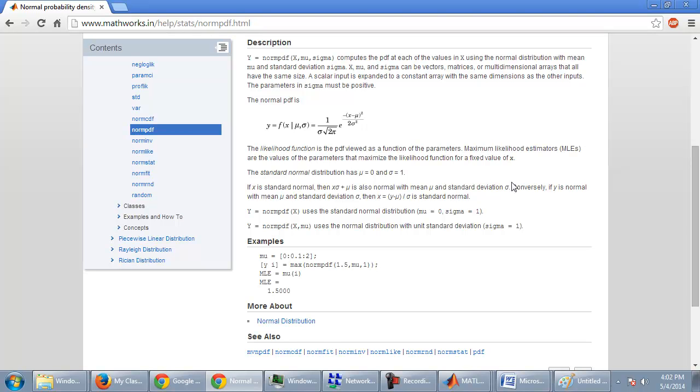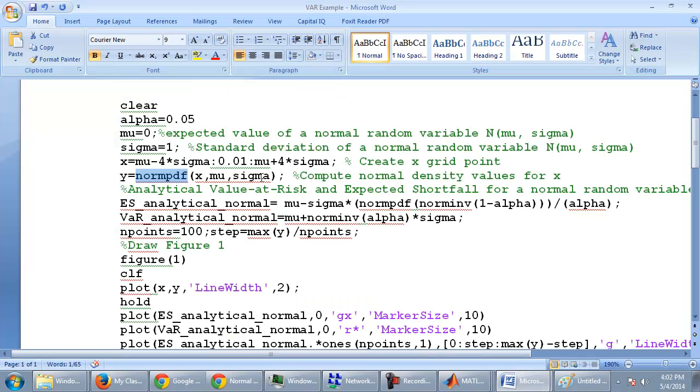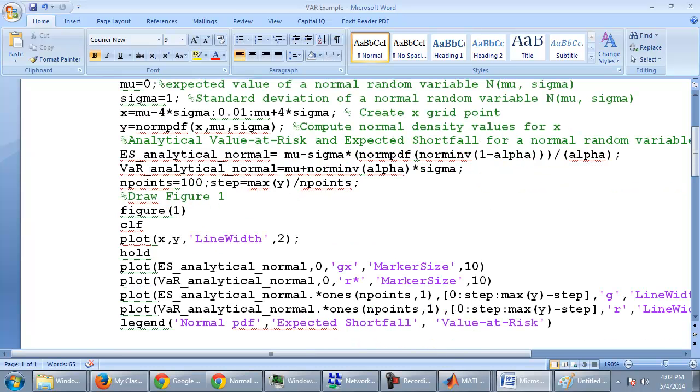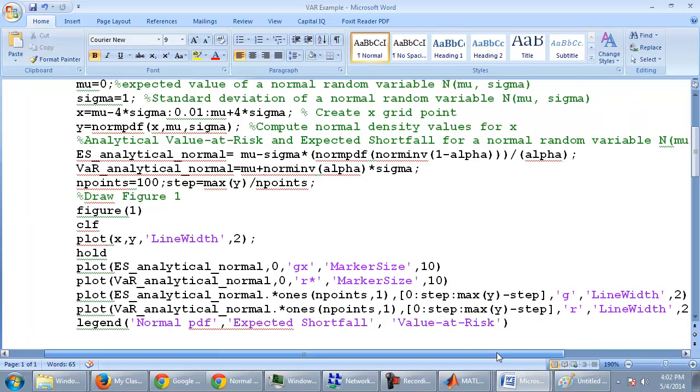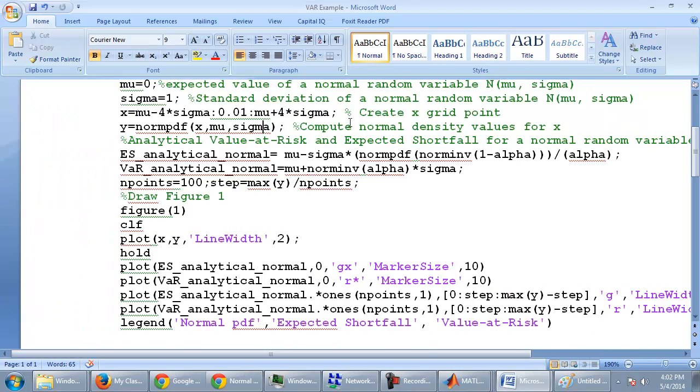The next here is the calculation of expected shortfall, where you will go to the point and find out what is the value if you breach your VaR limit. So that is again calculated using mu minus sigma into norm pdf.